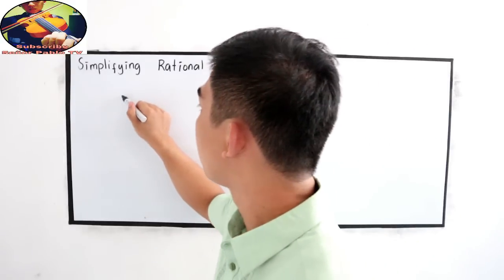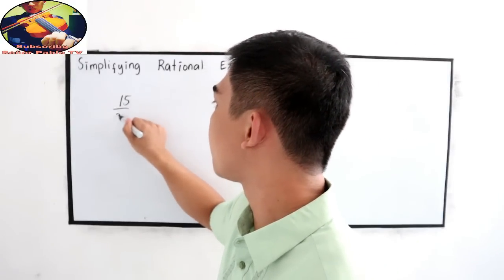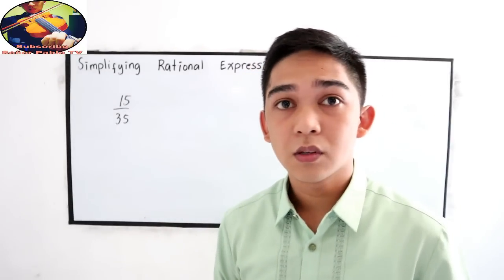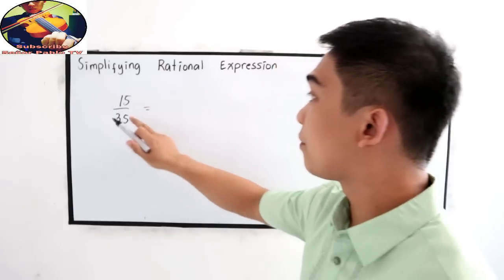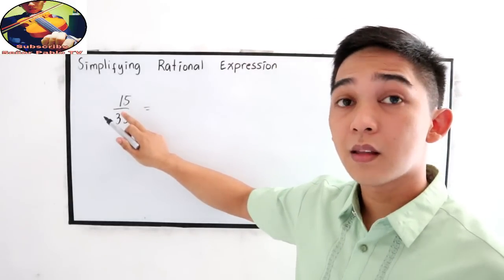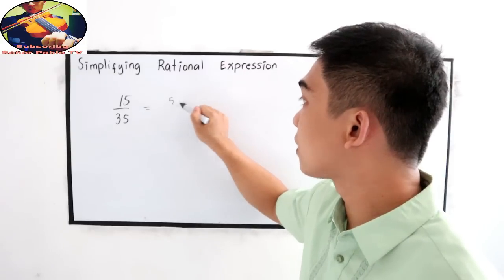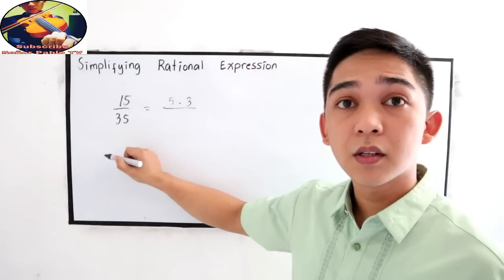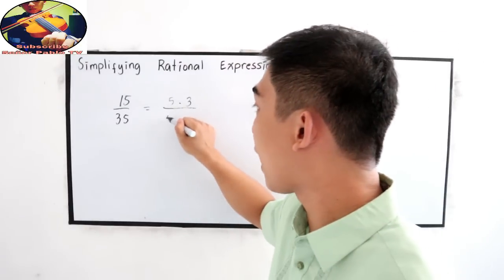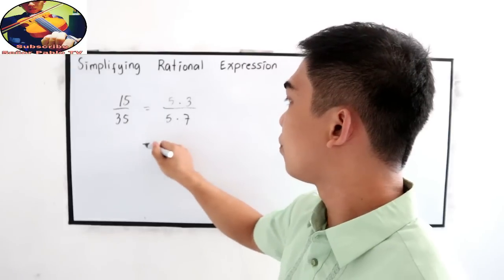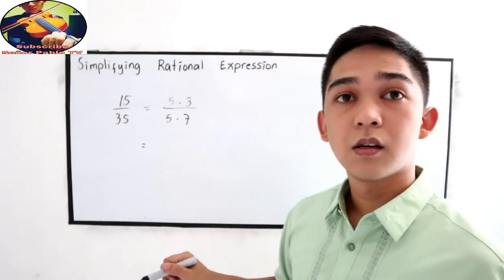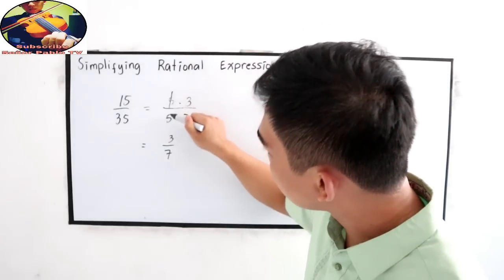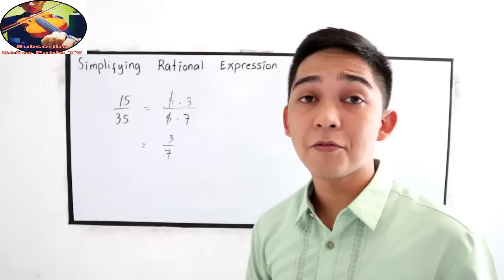Let's say we have 15 over 35. We can use cancellation method. All we need to do is find the factors of 15, that is 5 times 3, over factors of 35, that is 5 times 7, will give us 3 over 7. We just need to cancel 5 and 5, because 5 divided by 5 is equal to 1.